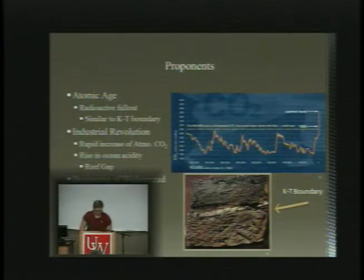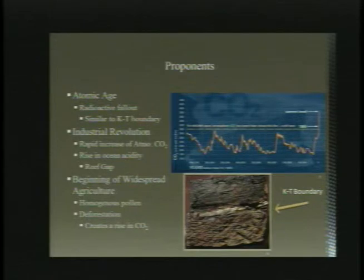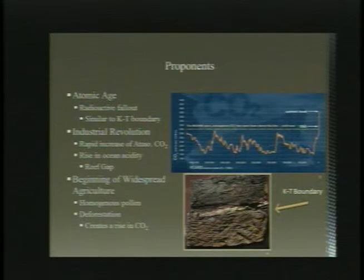The official adoption of the Anthropocene as a new epoch depends upon previously established criteria by the International Commission on Stratigraphy. Past epochs have been determined through a Global Stratotype Section and Point, which is a continuous strata — layers of sedimentary rock or soil — that marks a change in structure. The change or shift in sediments is referred to as a golden spike and is used as a geologic boundary between two epochs.